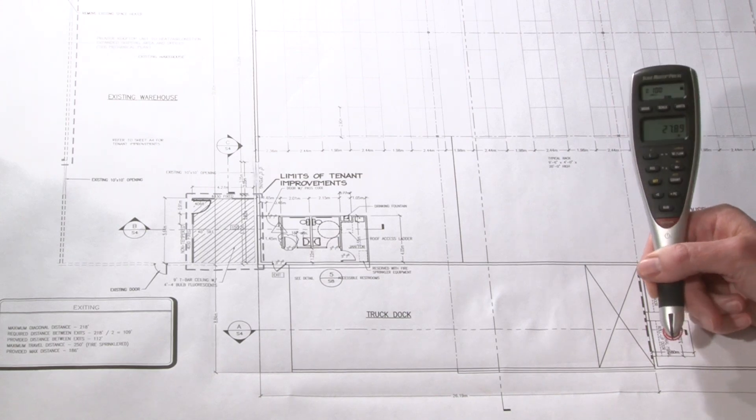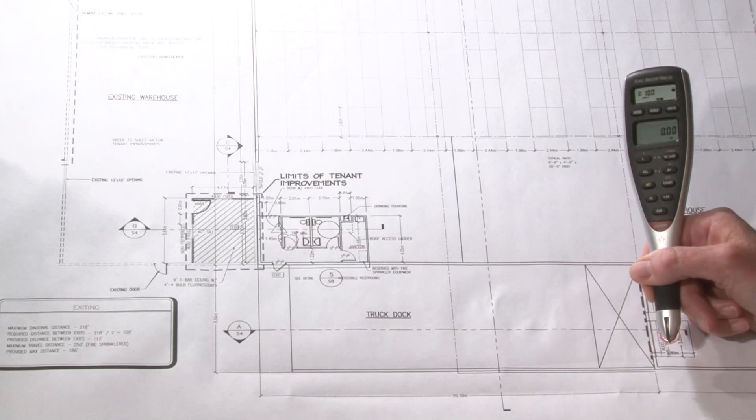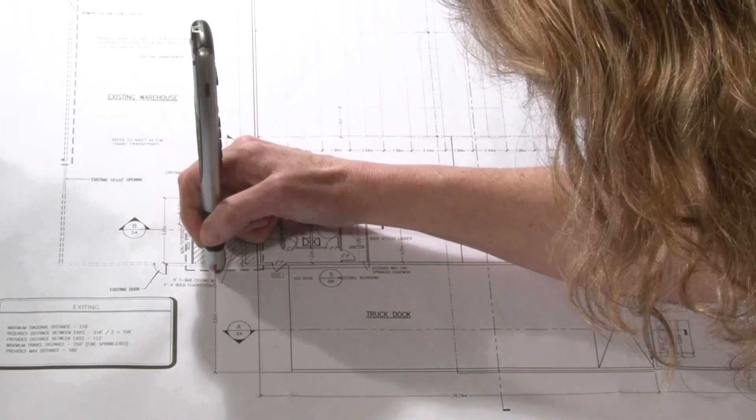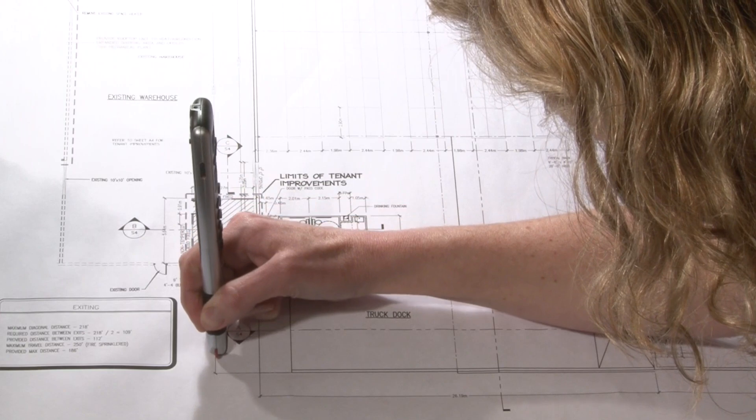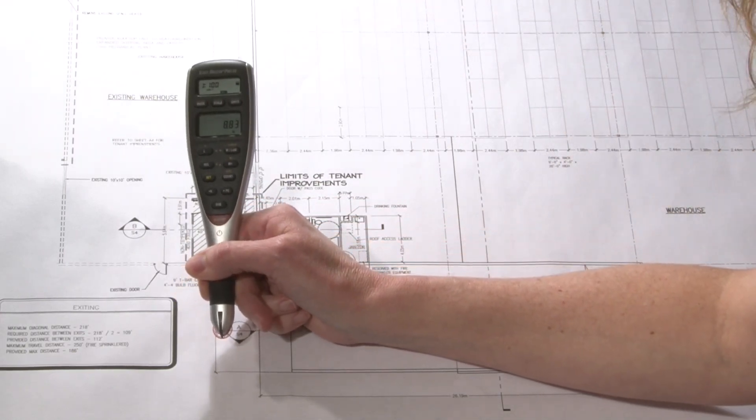Since we're taking the area of this, I'm going to label that as the length. My next measurement is going to be the width. Again, I line up my pointer and roll.